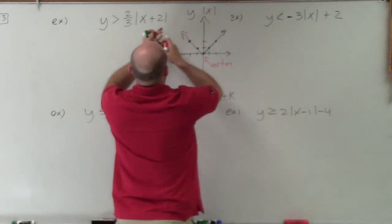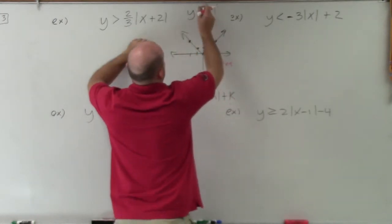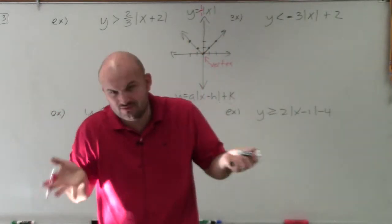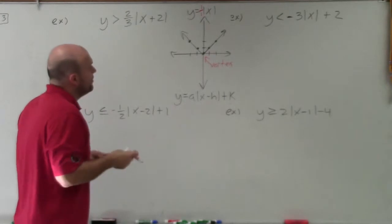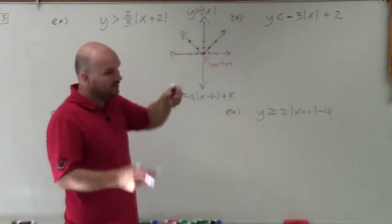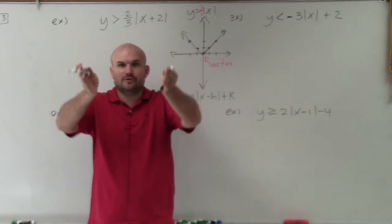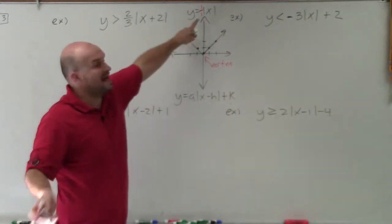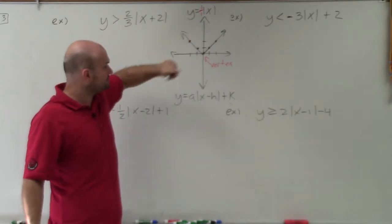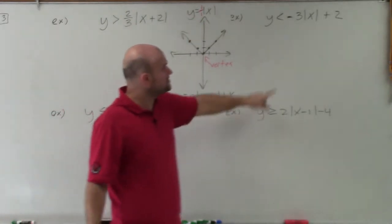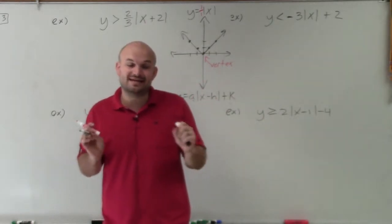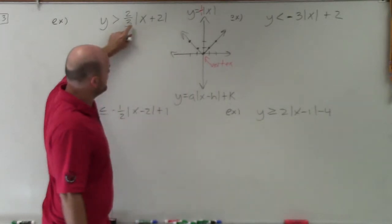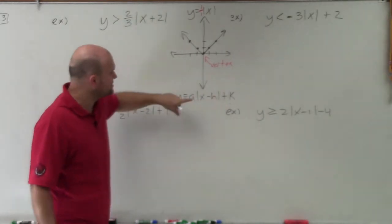The parent graph has an a that is 1 or 1 over 1. If you remember the parent graph when doing transformations, I just went up 1 over 1, up 1 over 1, because that's what the parent graph was and we didn't have anything different than a being 1. But now we have different numbers for the a. If that a is negative, that's a reflection over the x-axis.